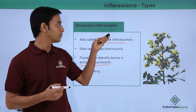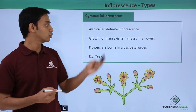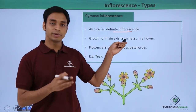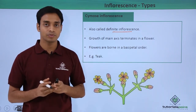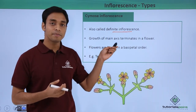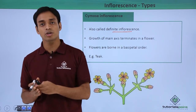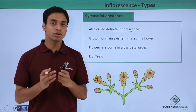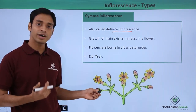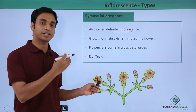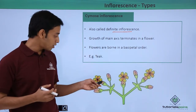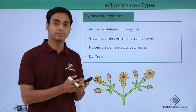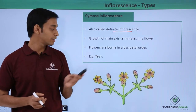The second type is cymose inflorescence, also known as definite inflorescence. Here the growth of the main axis terminates — the main axis stops growing after some time. The flowers are formed in a basipetal succession, unlike the previous acropetal succession. In basipetal succession, the newer flowers are found at the base, and the older flowers are found at the tip. This is the clear differentiation between acropetal and basipetal succession.